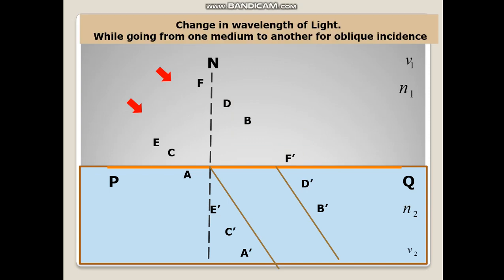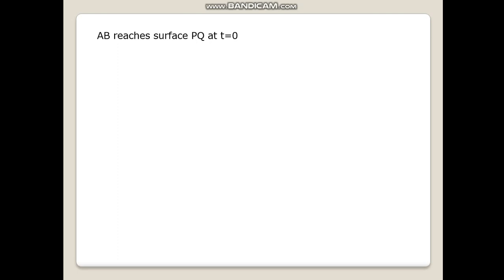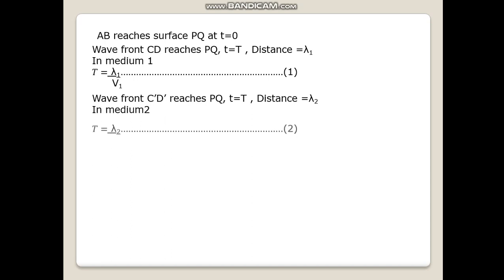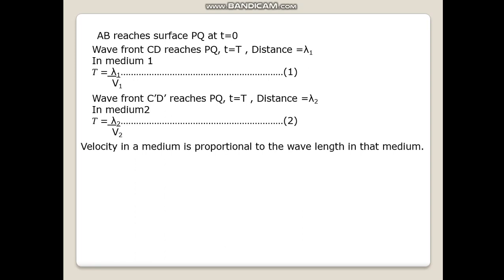Now let us see the change in wavelength of light while going from one medium to another for oblique incidence. The incident ray wavefront AB goes as A dash B dash. CD goes as C dash D dash. EF goes as E dash F dash. Wavefront AB reaches surface PQ at t equal to 0. Wavefront CD reaches PQ at t equal to capital T; distance is equal to lambda 1. In medium 1, T is equal to lambda 1 upon V1. Wavefront C dash D dash reaches PQ at t equal to capital T; distance is equal to lambda 2 in medium 2. Therefore T is equal to lambda 2 upon V2. Velocity in a medium is proportional to wavelength in that medium. From equations 1 and 2, lambda 2 upon V2 is equal to lambda 1 upon V1.